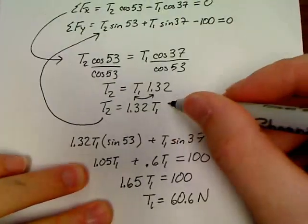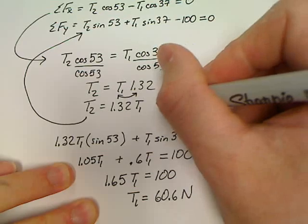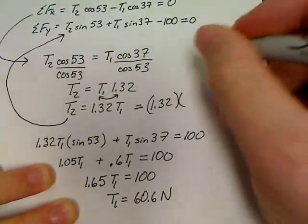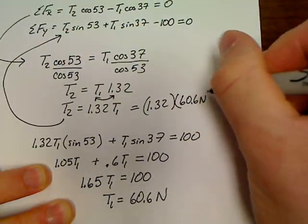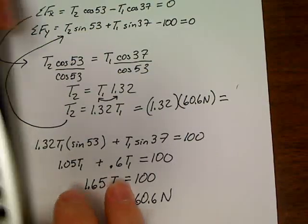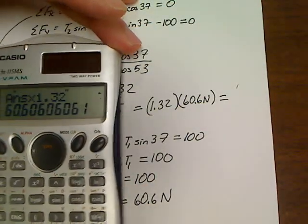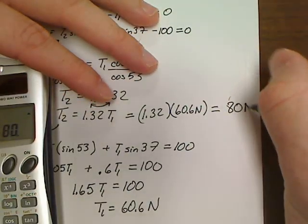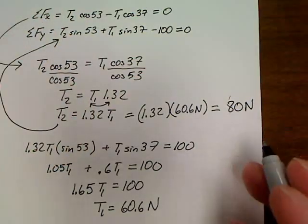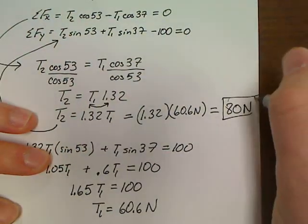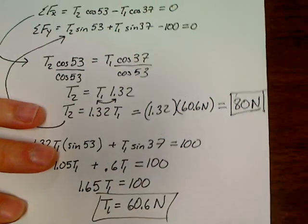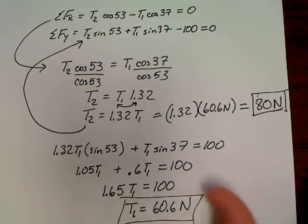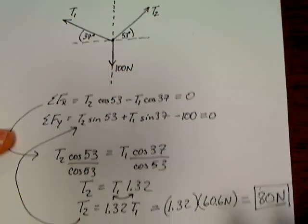Now, if we would like to find our value for T2, we can come right back up here and go 1.32 times 60.6 Newtons times 1.32. And we've got an even number, 80. So there's our answers to this question. T2 is 80. T1 is 60.6 Newtons. All right. So that is your basic sum of the forces question, your basic stoplight question.